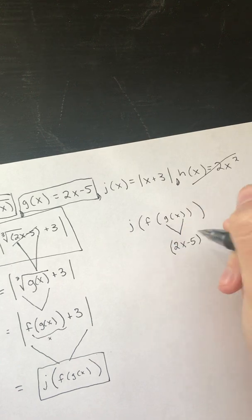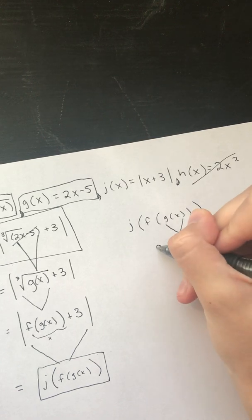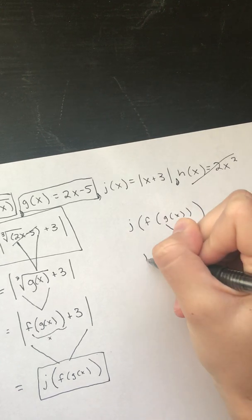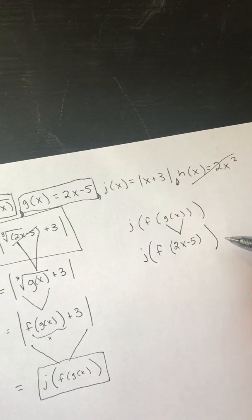I like to put parentheses around it so I know that it's one little thing. I'm taking f of that and we're taking j of all of that. Alright, next thing.